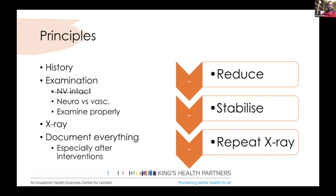Keep it very specific — don't write 'neurovascular intact.' Neurological and vascular assessment are two separate things. For vascular assessment, ideally feel for pulses, look at capillary refill, and note whether the foot or hand is warm and well perfused. Examine everything properly — don't take shortcuts. Get your radiographs and document everything, especially if you intervene. If you're doing a trauma call as SHO or registrar, you'll have to reduce fractures or dislocated joints, stabilize them, and make sure you document what you've done.